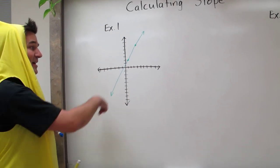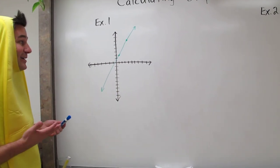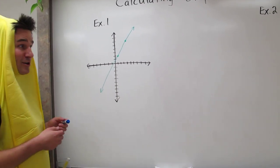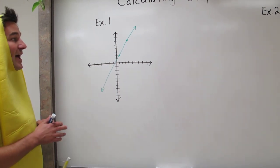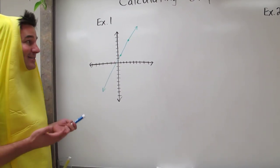Here's an example with another green line. Now we already know the slope is positive from what we learned just a second ago, but let's figure out how we can actually calculate the slope.